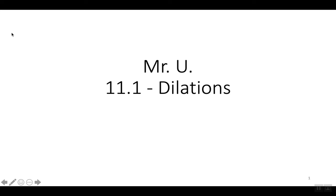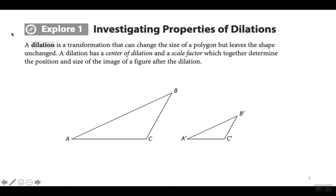Chapter 11.1 Dilations. A dilation is a transformation where you change the size of a polygon to make it bigger or smaller. But it's going to still be the same shape, just bigger or smaller. The two shapes are going to be similar. The angle measures are going to stay the same; you're just making the polygon bigger or smaller.